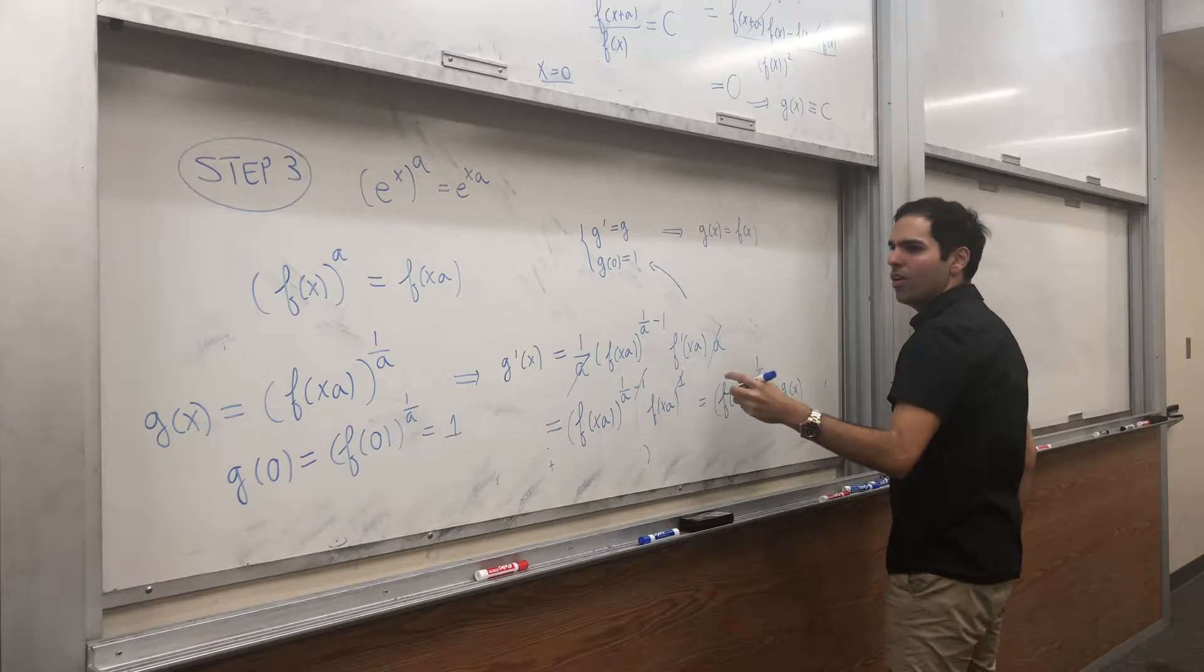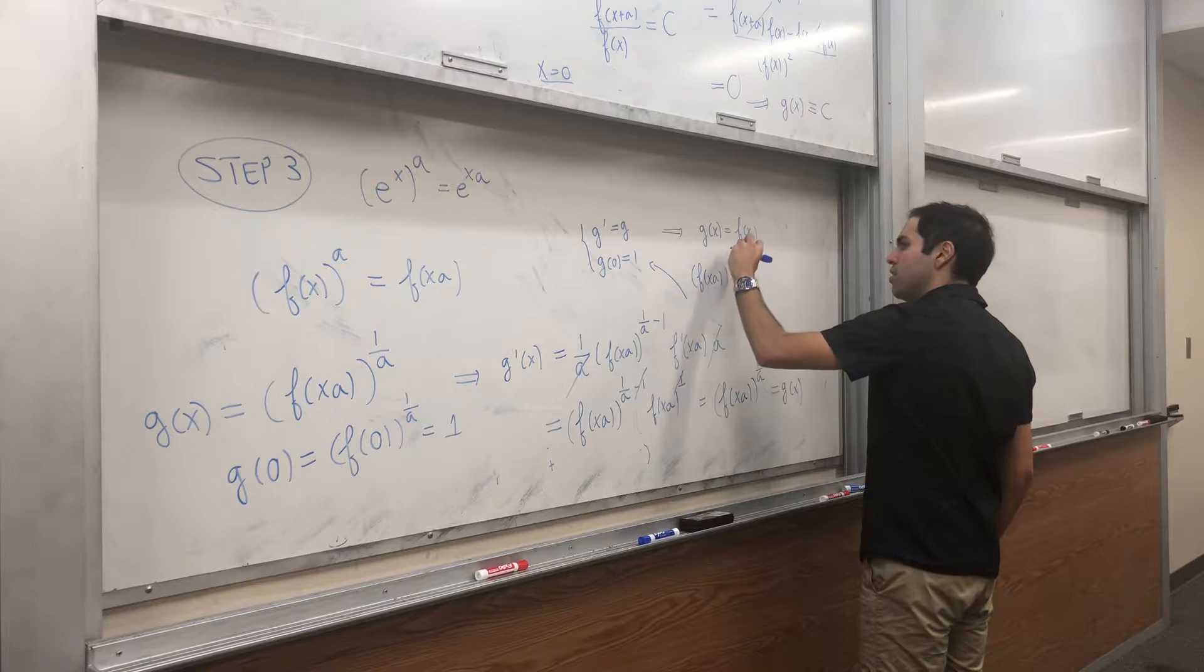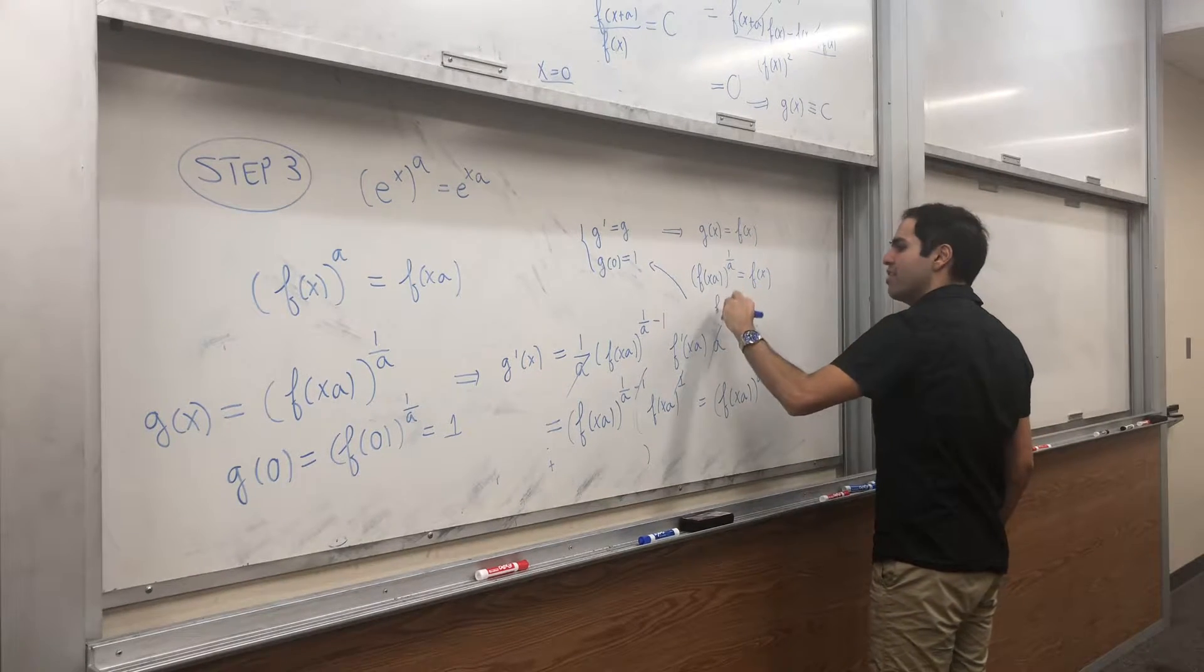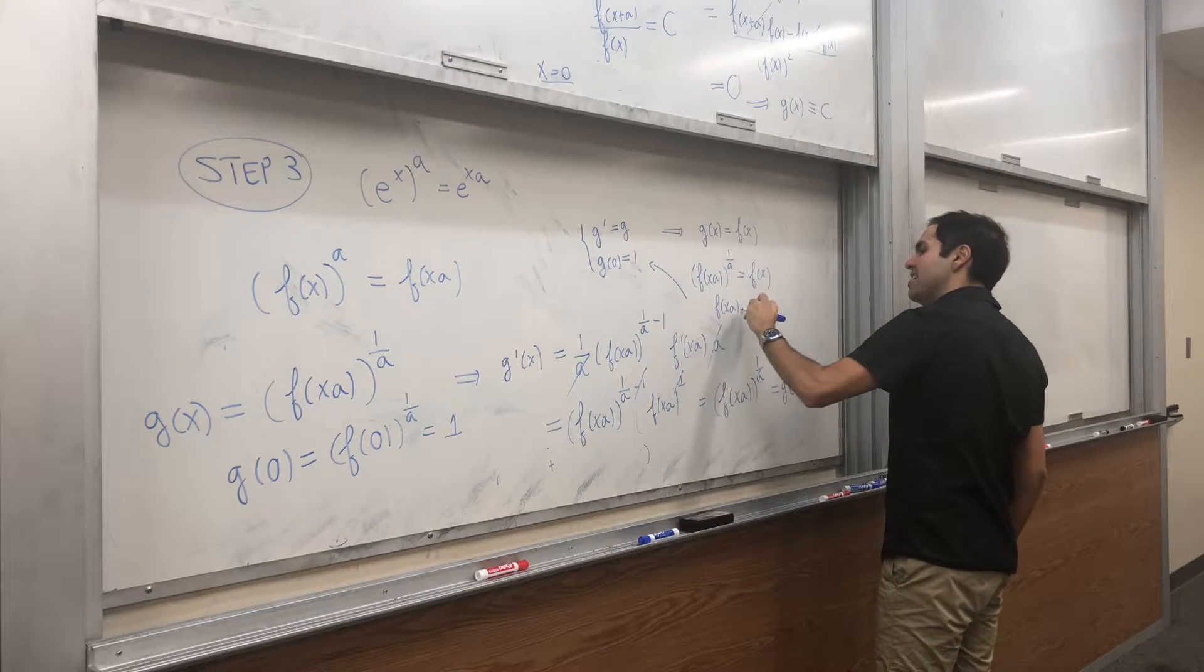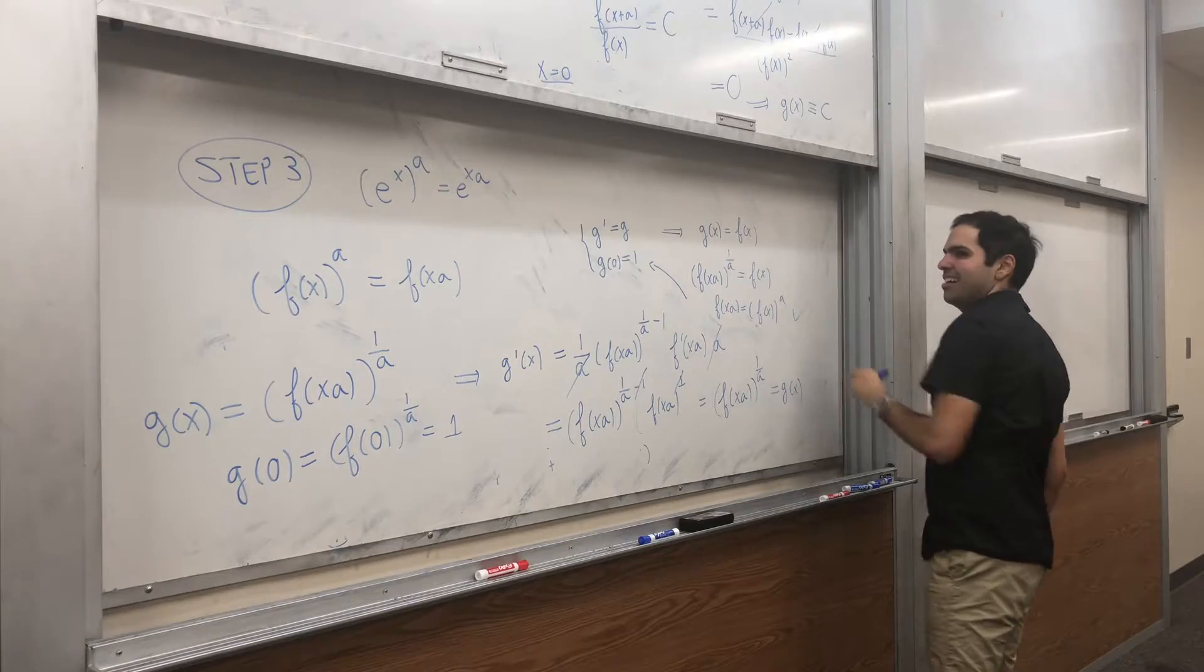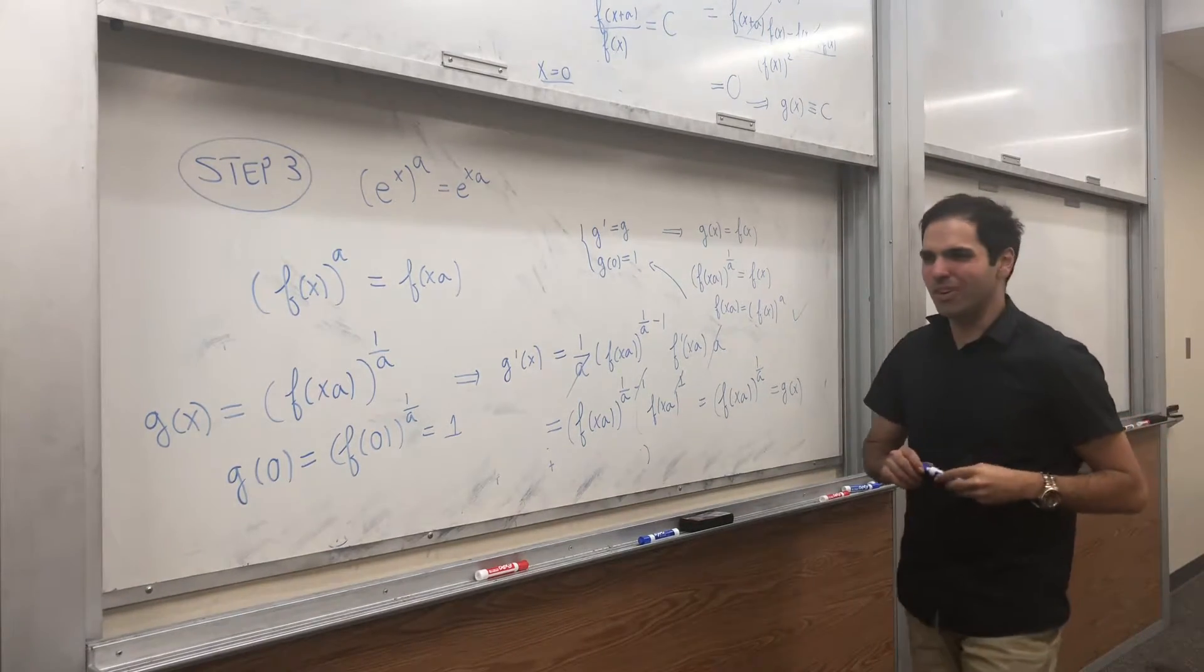And therefore, what do we have? f of x a to the one over a equals to f of x. And therefore, f of x a equals to f of x to the ath power. Ta-da! And this is the third property we wanted to show.